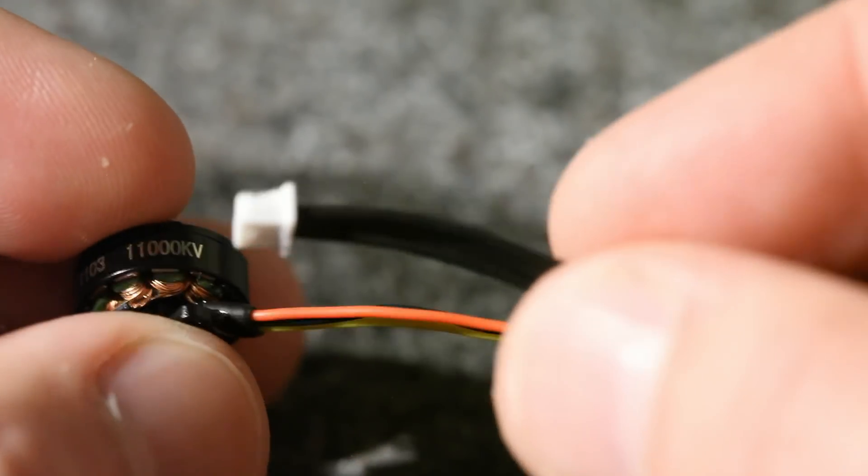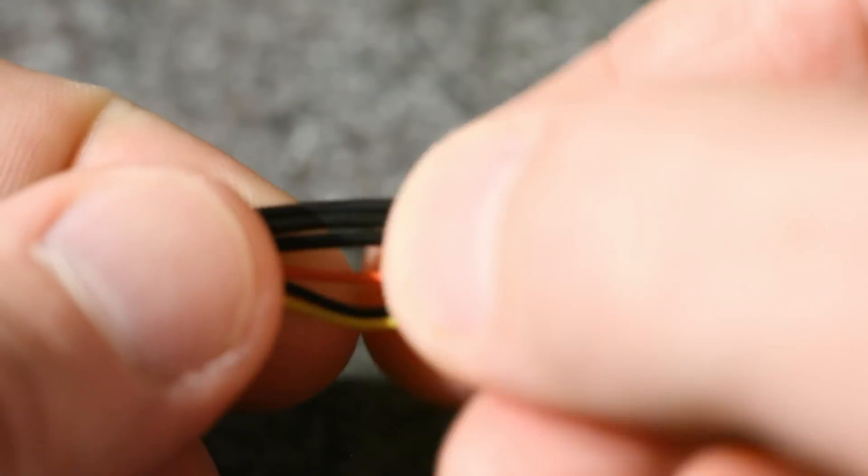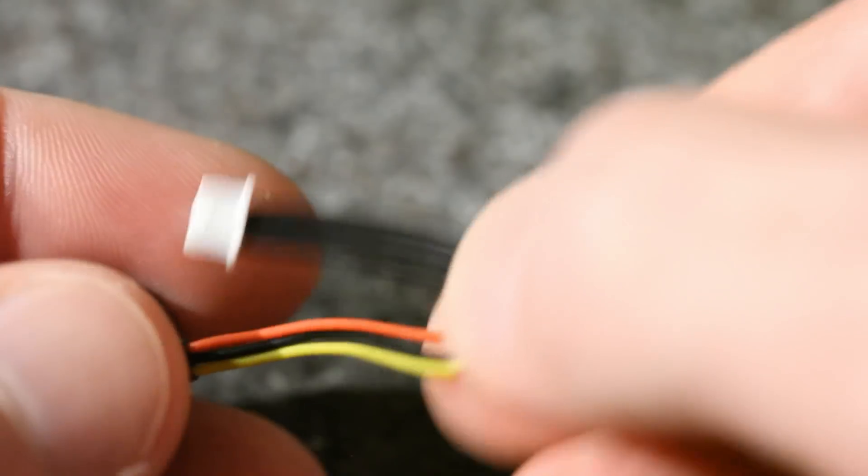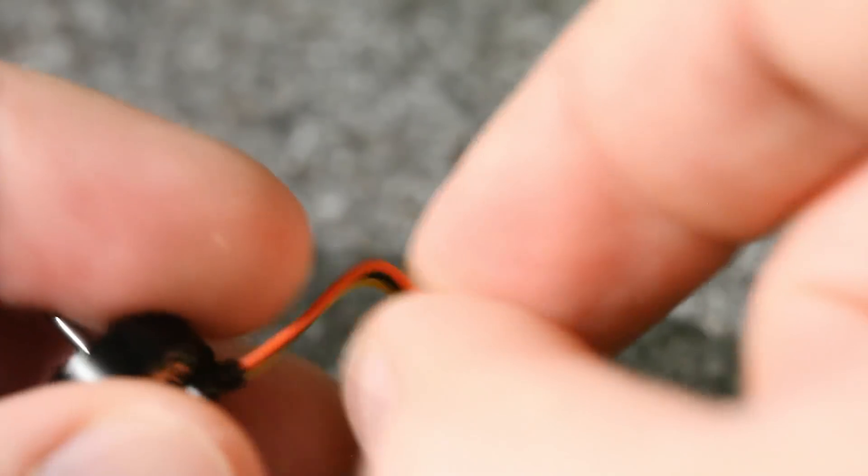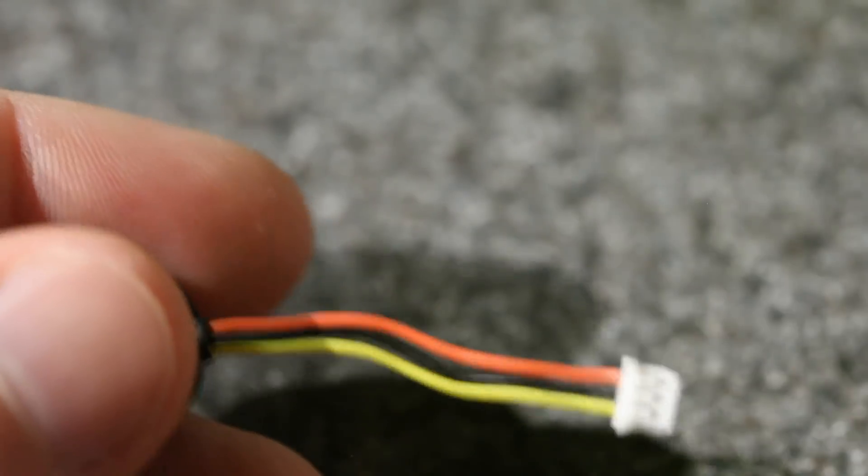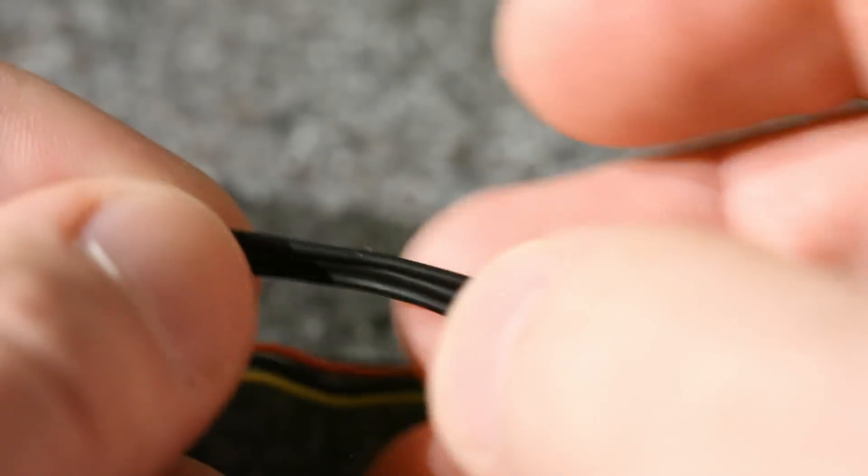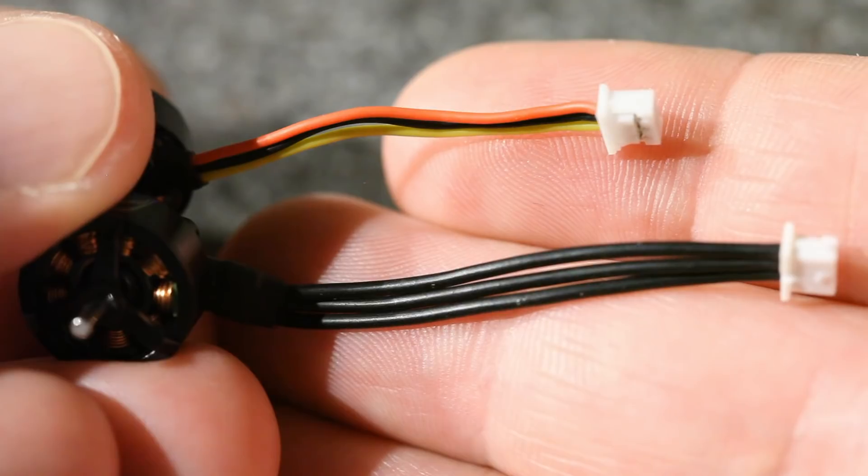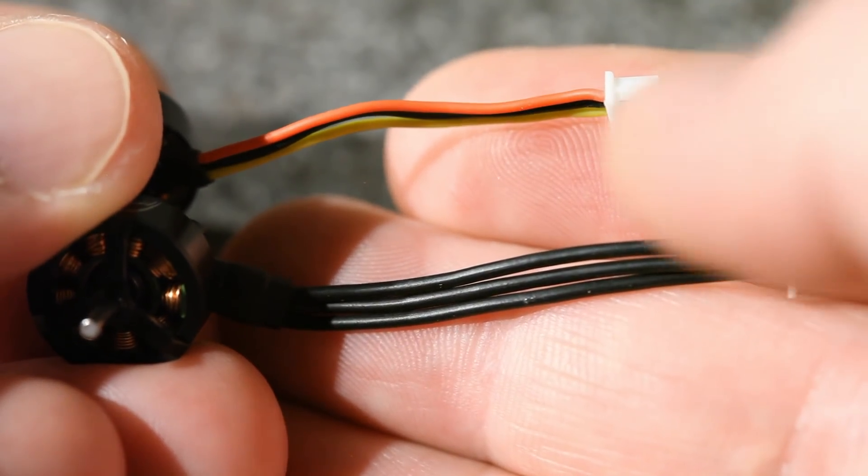If you compare that to this 11,000 kV motor, you can see the difference in the wires right here, both in thickness and in flexibility. These wires would kink and stay that way, so I think these wires were a little bit more brittle. I like the quality of the wires on these new motors, and they should be able to handle more current, but that does cost a little bit of weight.